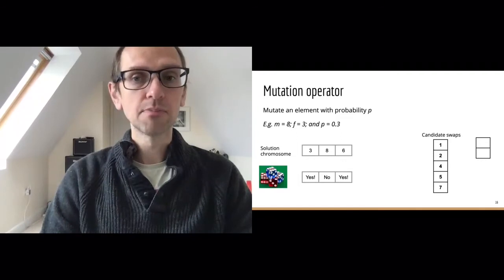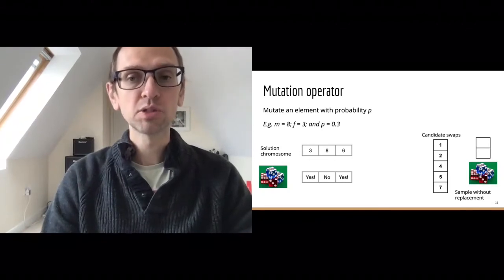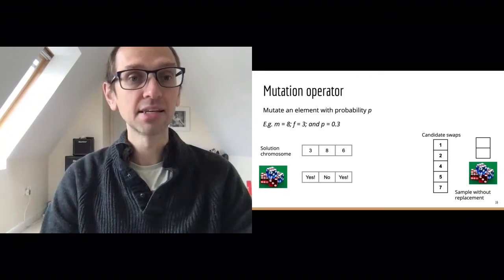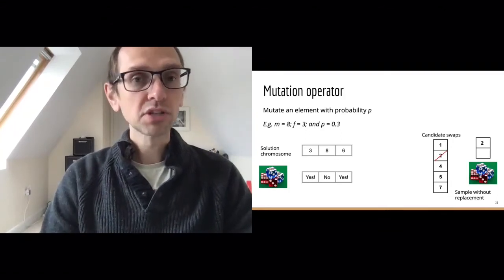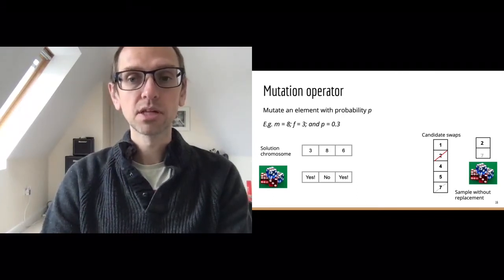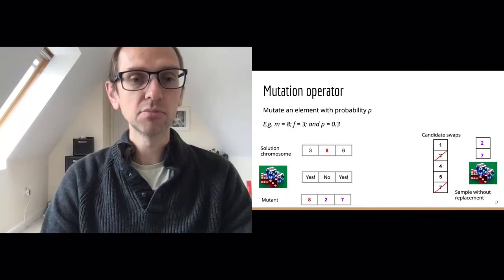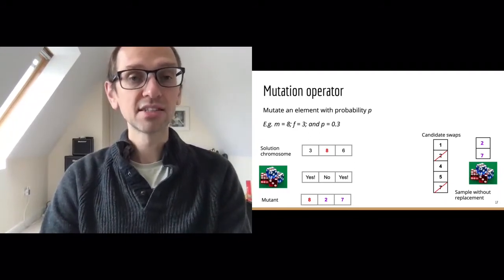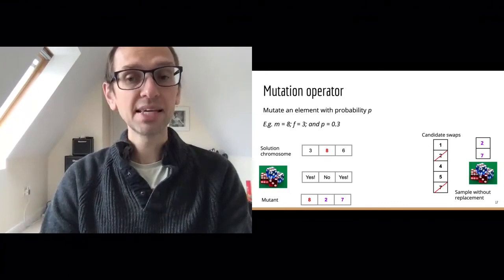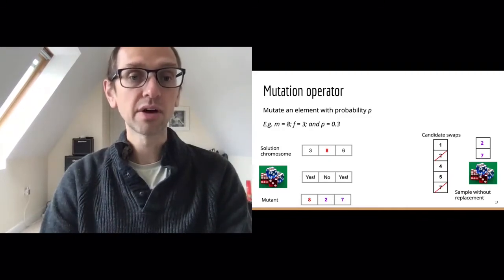We need to fill 2 slots, so we've created a vector of size 2. We do sampling without replacement — once we take a number out of the candidate swap array we don't put it back, as that would give an infeasible solution. We roll the dice: the first number pulled is index 2, which is number 2, then we roll again and get number 7. We concatenate 8 with 2 and 7 — that is our mutant. We repeat that operation as many times as needed to build up the population size required.